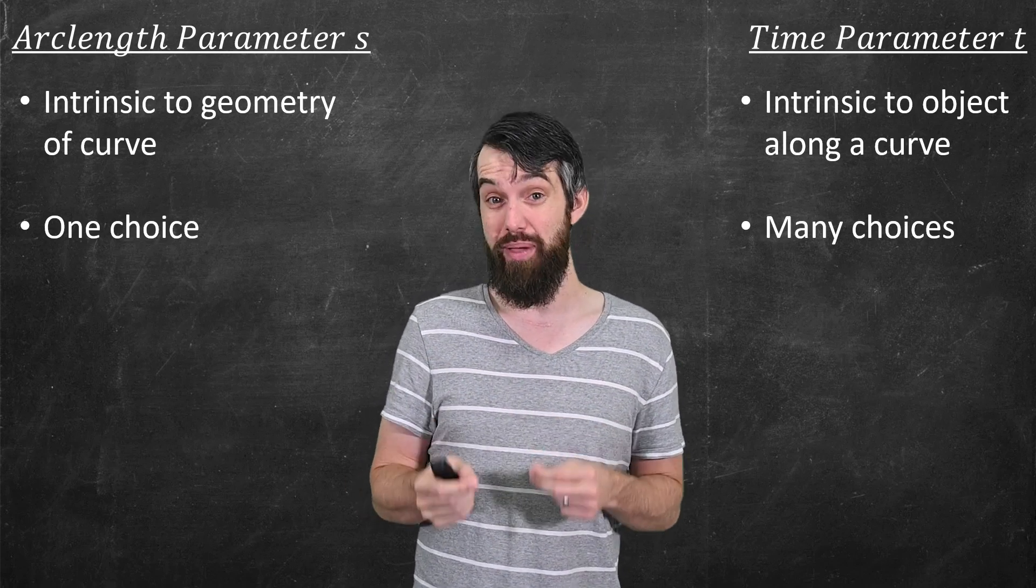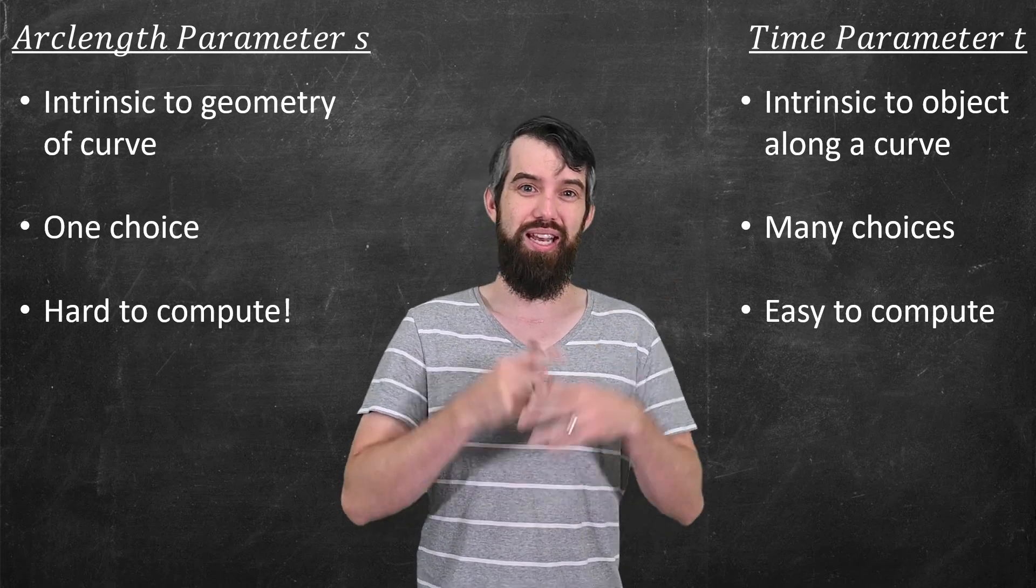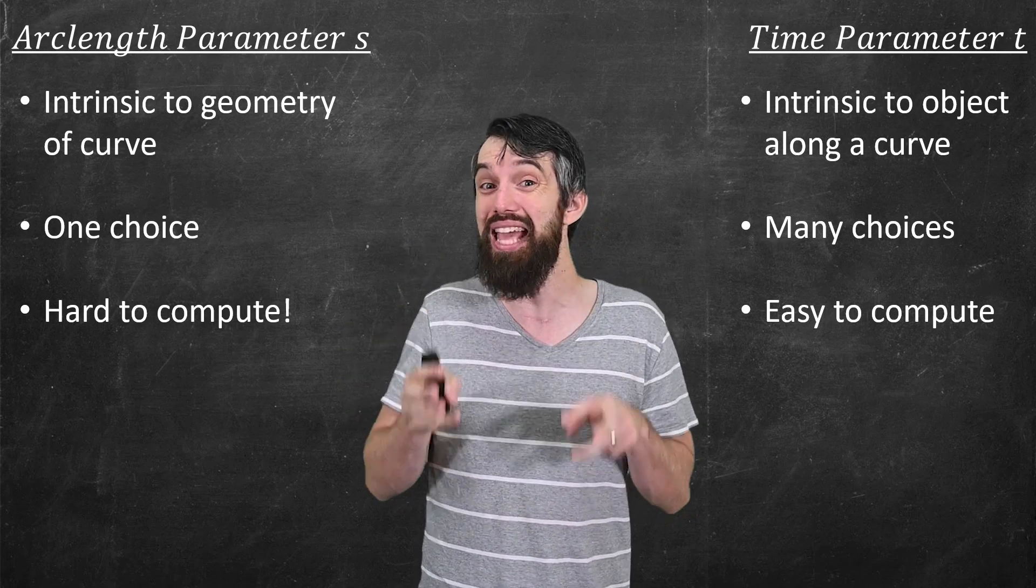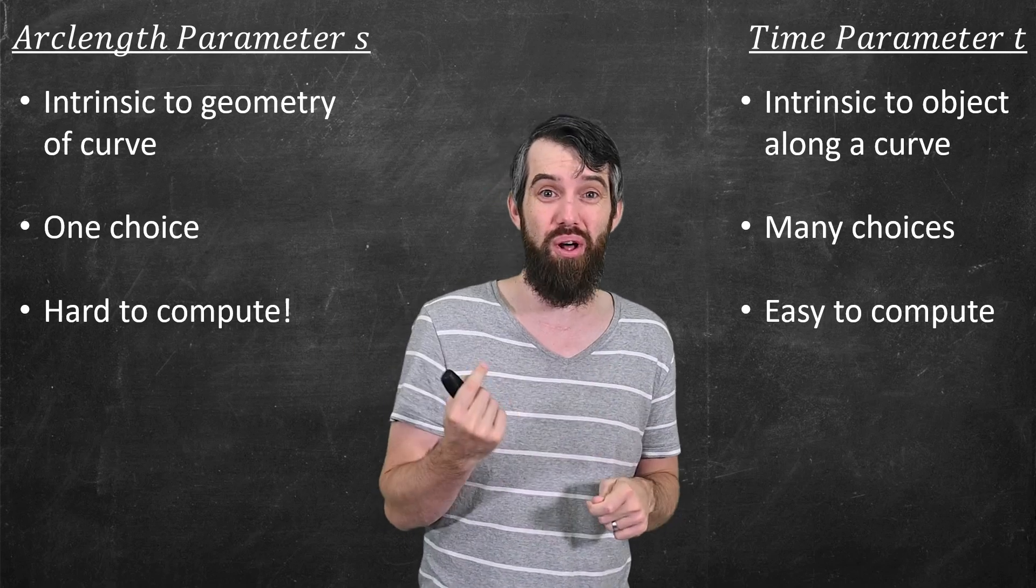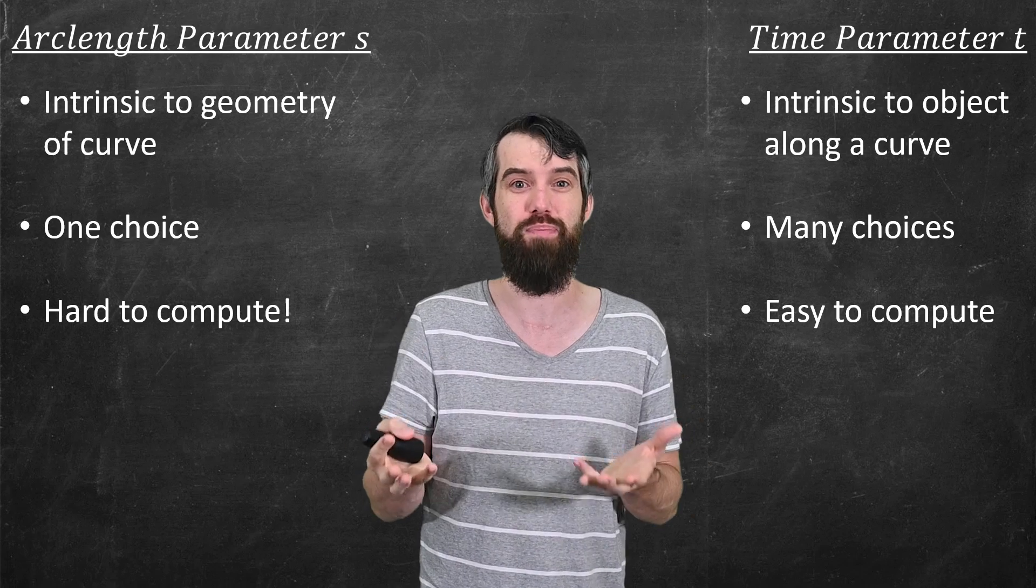But the arc length parameter does have a pretty big flaw, and that's that it's actually really hard to compute. Because it's an integral of a square root of a bunch of stuff squared, those integrals tend to get kind of messy. And they get messy pretty quick. After you leave like the circle and the helix, there's not so many easily able to be done just sort of by pen and paper.